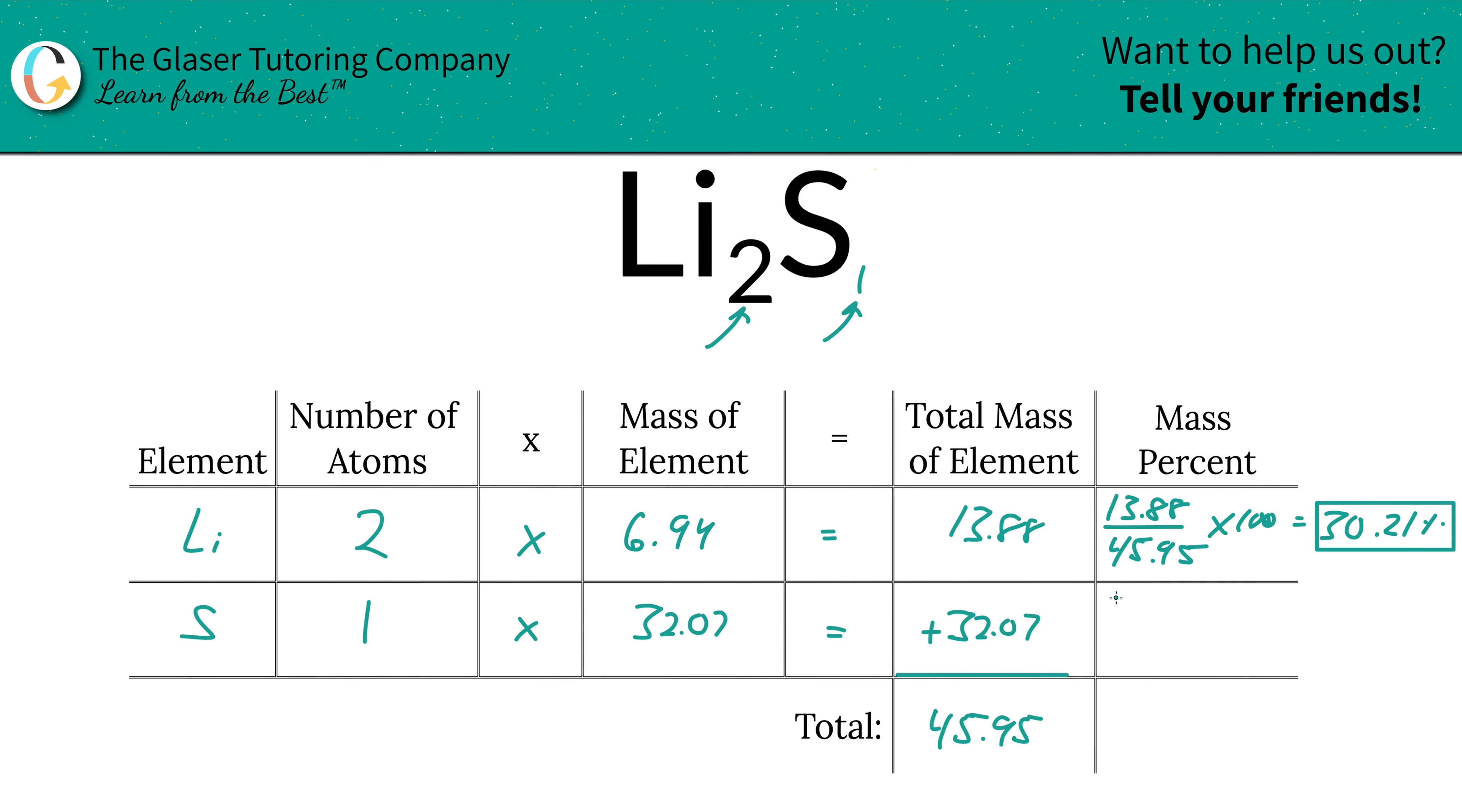And next we're going to do sulfur. Take the total mass of the sulfur here, 32.07, divide by the total mass of the compound, 45.95, multiply that by 100. And you're going to get a percentage here of roughly 69.79%.